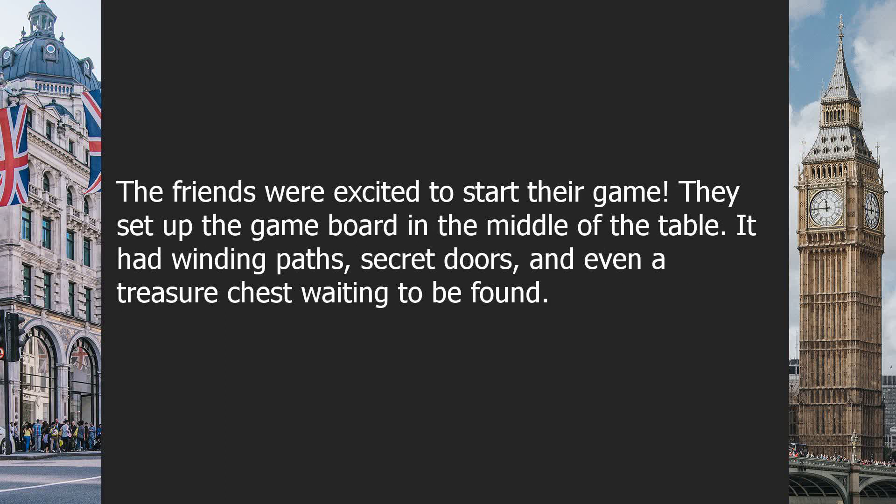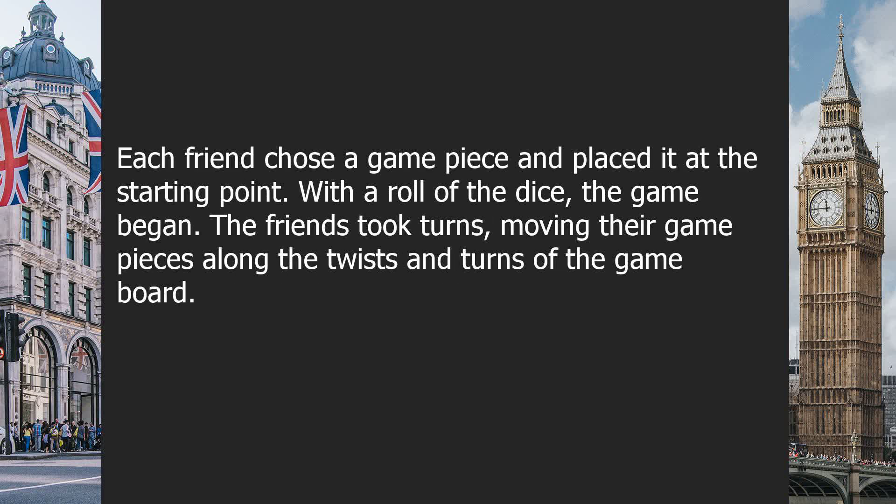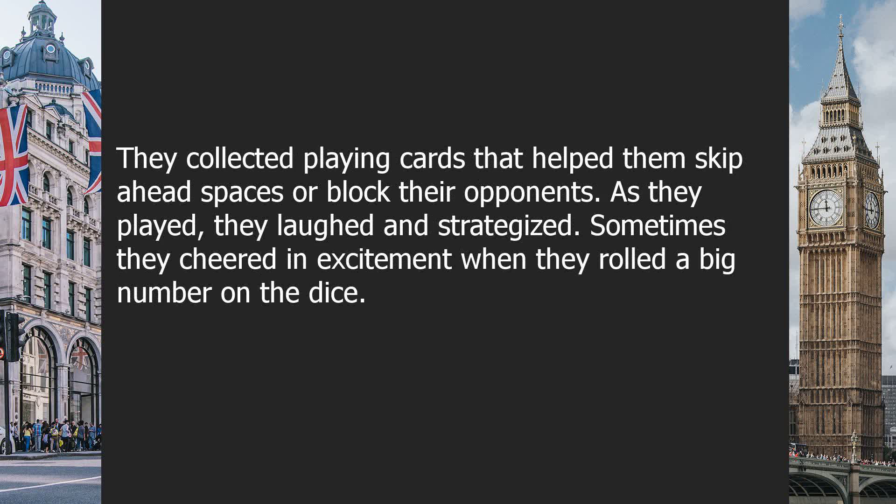The friends were excited to start their game. They set up the game board in the middle of the table. It had winding paths, secret doors, and even a treasure chest waiting to be found. Each friend chose a game piece and placed it at the starting point. With a roll of the dice, the game began. The friends took turns moving their game pieces along the twists and turns of the game board. They collected playing cards that helped them skip ahead spaces or block their opponents.